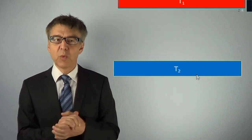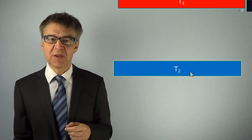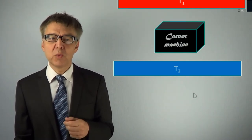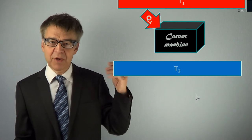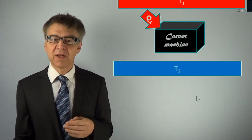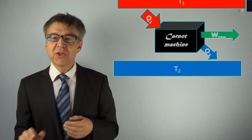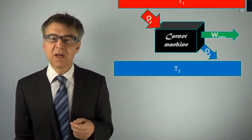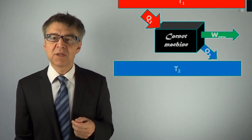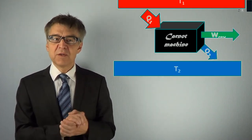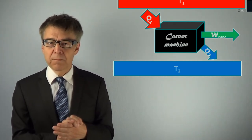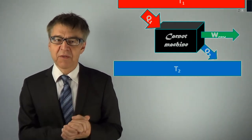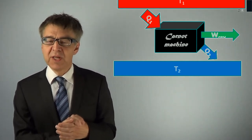A Carnot engine is operating between two temperature levels, T1 and T2. T1 is a high temperature, T2 is a low temperature. Heat Q1 flows from the top level into the Carnot engine. The engine gives off useful work W to the surroundings. And also, a further heat Q2 flows to the lower temperature level. In this direction of the cycle, the engine operates as a Carnot heat engine.